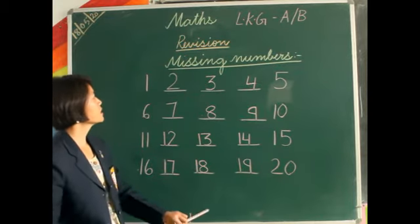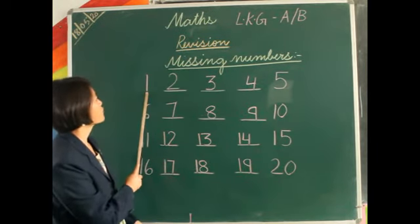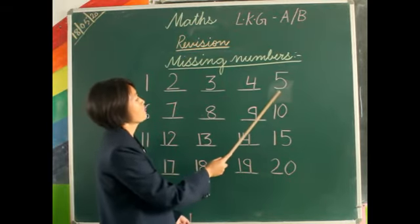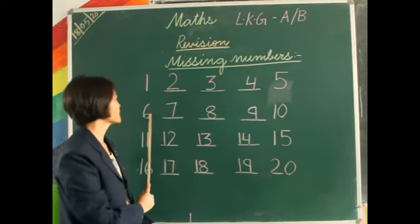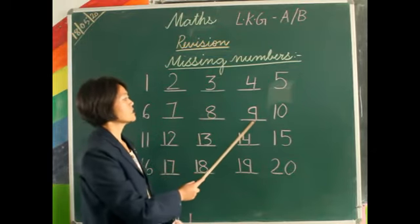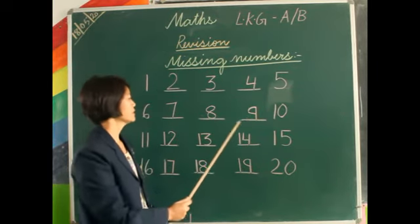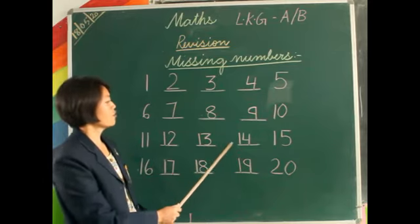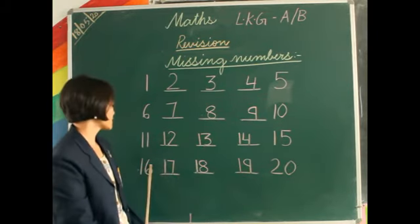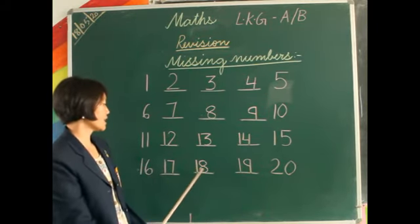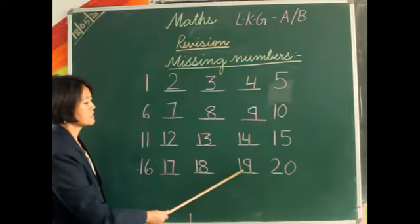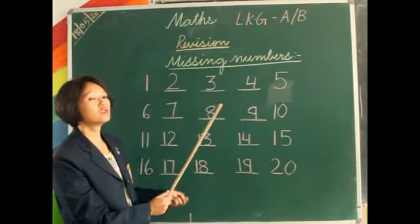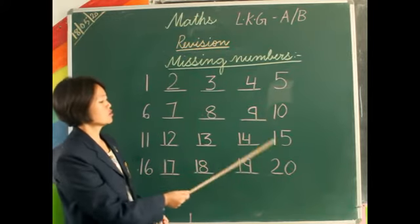Now again we will repeat the numbers: 1, after 1 is 2, 3, 4, 5, 6, 7, 8, 9, 10, 11, 12, 13, 14, 15, 16, 17, 18, 19, and 20. So dear children, learn the numbers and do the revision 1 to 20.